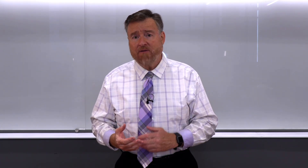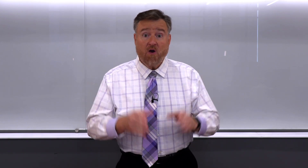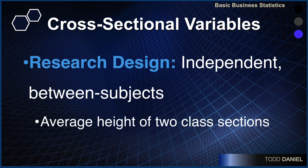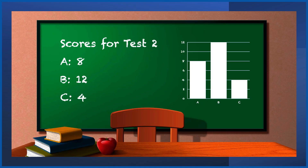For example, we might compare average height across two different classes taking the same survey. Here is an example bar chart: we asked how many people scored an A, B, or C on test 2. The most common score was a B. Most people got either an A or a B, with the fewest number getting a C.